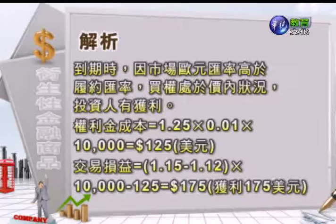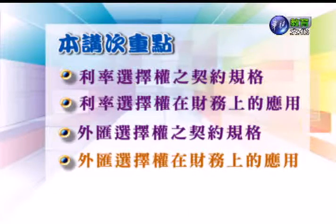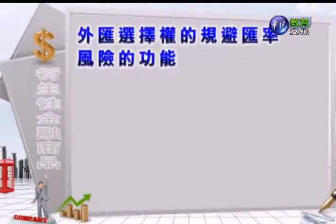所以它净赚了170美元。接着我们来看第四个重点：外汇选择权在财务上的应用，与股价指数选择权功能一样，外汇选择权也具有规避汇率风险的功能。第一个，它可以规避或有资产或有负债的汇率风险。针对国际间的工程招标或者公司债的招标，工程的总价款跟公司债它可能以各种通货计价，由于竞争者众多，没有百分之百的把握可以取得，所以产生了或有资产或有负债的汇率风险，这时候外汇选择权就提供了另外一种避险的选择工具。